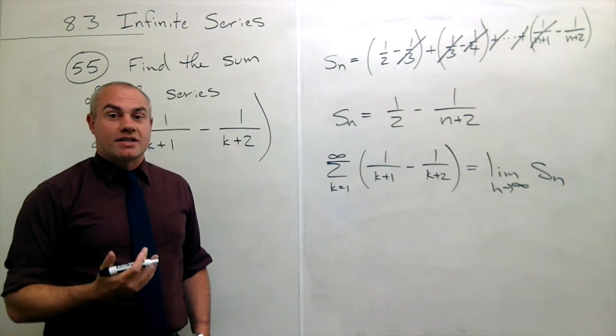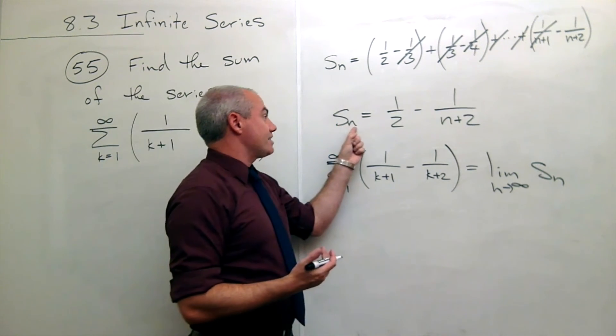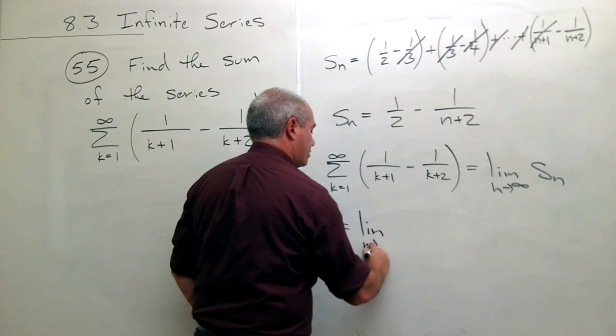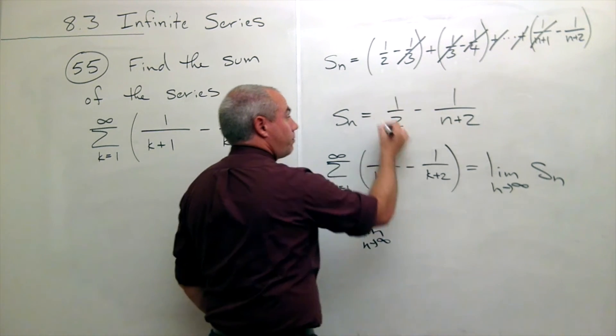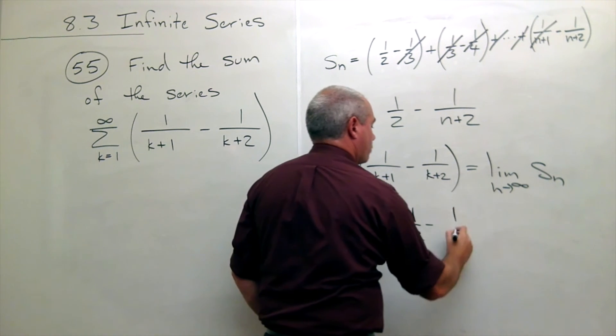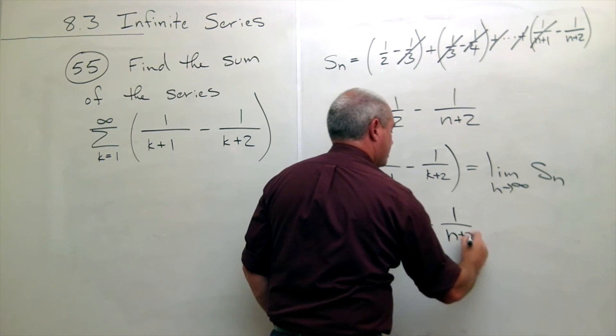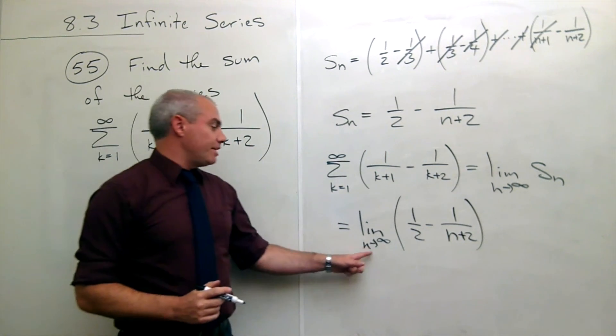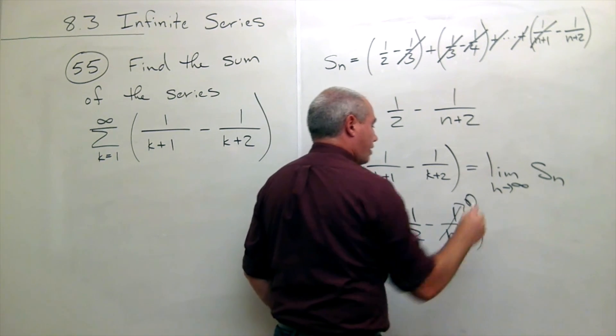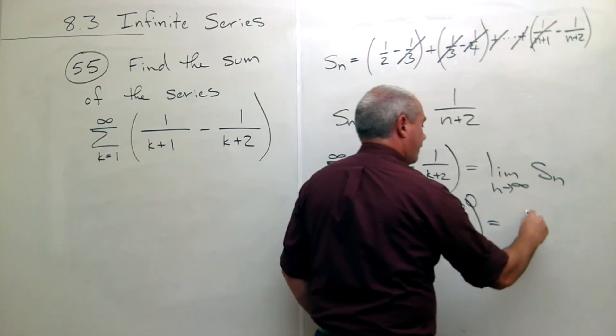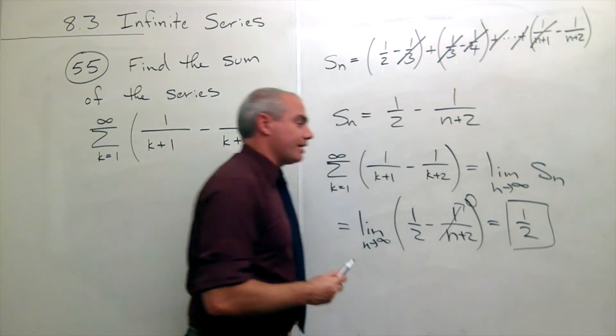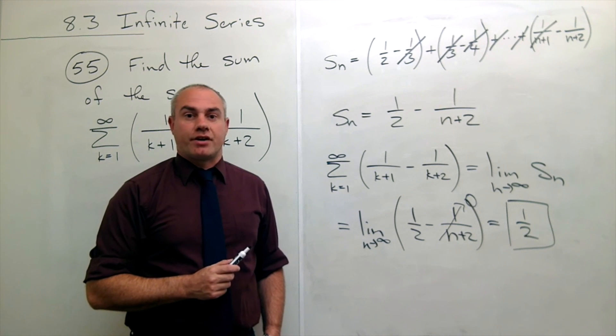Well now that I know what s sub n is, I can just plug that in. So that's the limit as n goes to infinity of the nth partial sum, which is 1 half minus 1 over n plus 2. Take the limit as n goes to infinity, this whole term goes to 0, and so all that's left over is 1 half. And that is the sum of this infinite series.